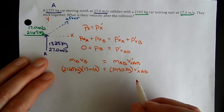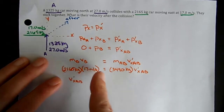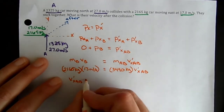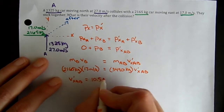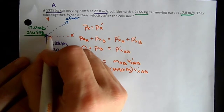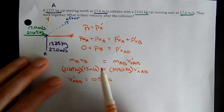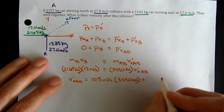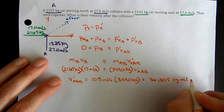Solving for the final x velocity: multiply 2,165 by 17 and divide by 3,490 kilograms. We get a final velocity in the x direction of 10.5 meters per second. Multiplying that by the total mass gives us an x momentum of 36,805 kilogram meters per second.